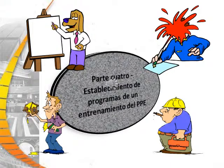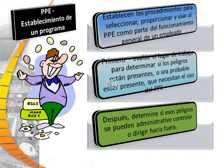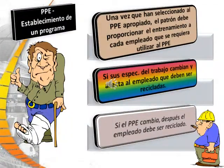Establishing a Personal Protective Equipment training program. Set out procedures for selecting, providing, and using personal protective equipment as part of the employee's routine operation. First, assess the workplace to determine if hazards are present, and if likely to be present, which necessitate the use of personal protective equipment. Next, determine if those hazards can be administered, controlled, or engineered. Once the proper PPE has been selected, the employer must provide training to each employee required to use it. If job specifications change and affect employees, they must be retrained. If the personal protective equipment changes, the employee must also be retrained.